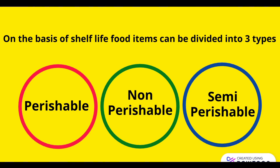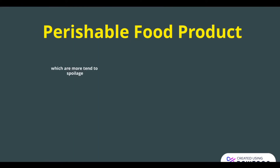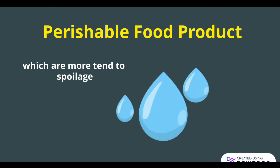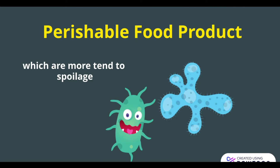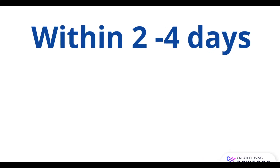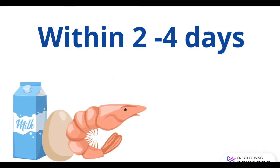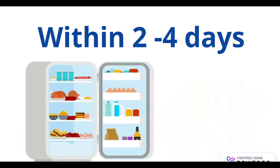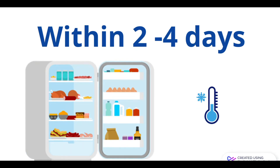Let's see what is a perishable food product. Perishable food products are those which tend to spoil very easily. Because they contain a higher amount of water, and we know microorganisms need water to grow. So, due to the availability of enough water, they start growing, and as a result, food starts spoiling within two to four days. Examples are egg, meat, fish, poultry, fruits and vegetables. But still we have a remedy to protect them from microorganisms by keeping them in the refrigerator or in a cool and clean place.